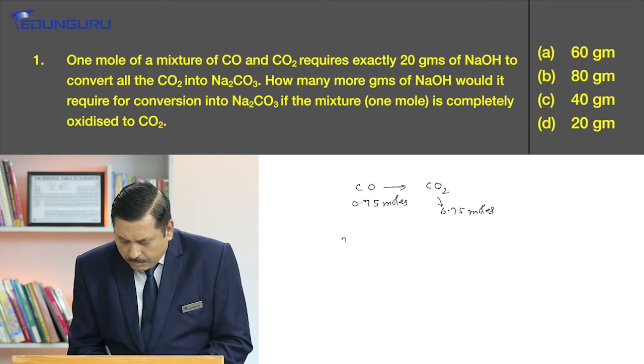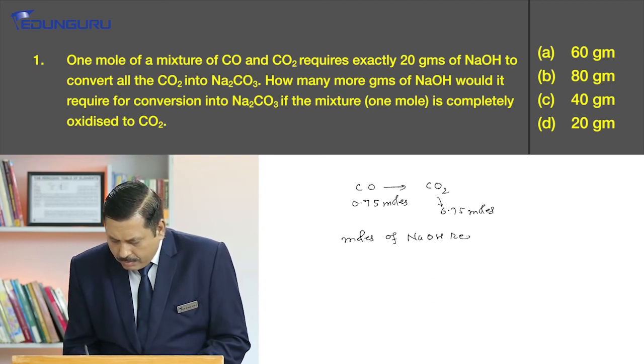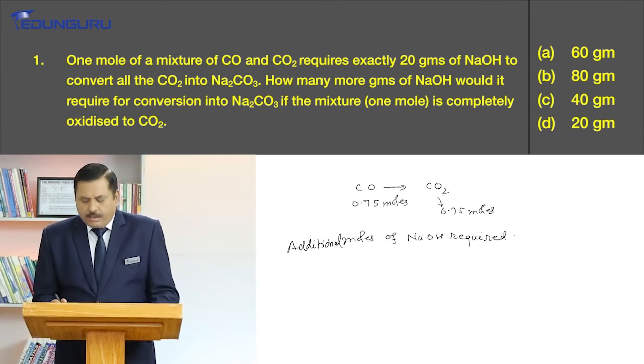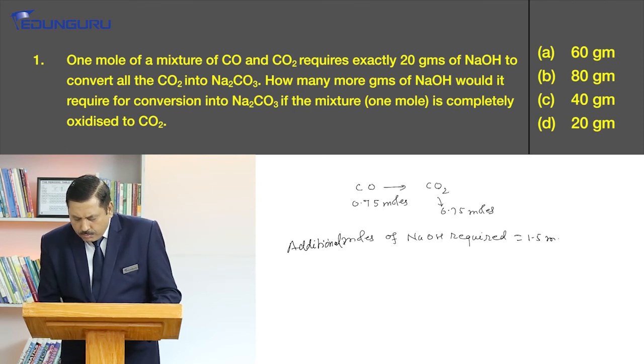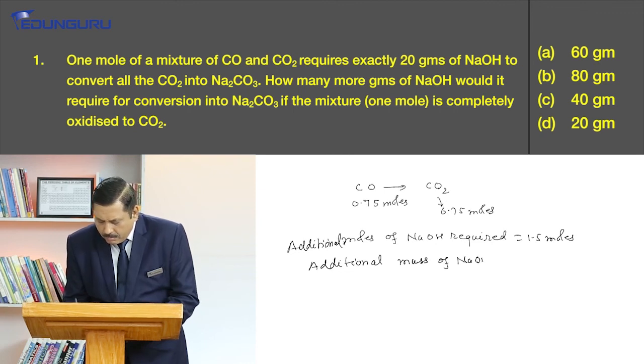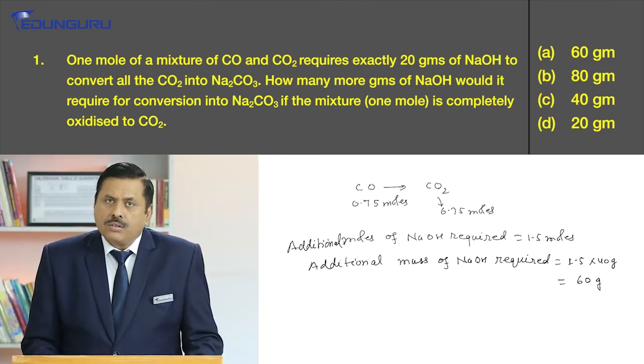And therefore, moles of NaOH required, rather additional moles of NaOH required, will be 1.5 moles. And therefore, mass of NaOH required is equal to 1.5 into 40 grams, which comes out to be 60 grams. And therefore, your answer is option A.